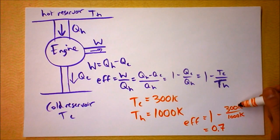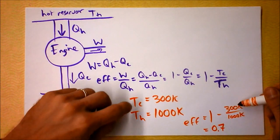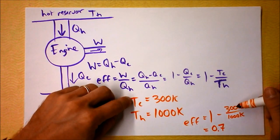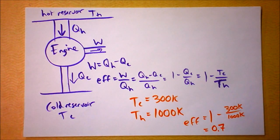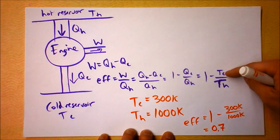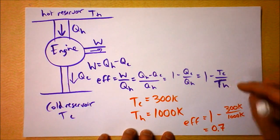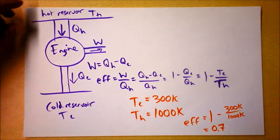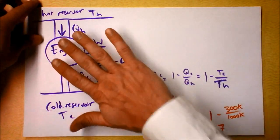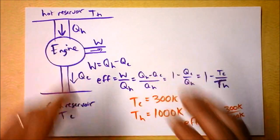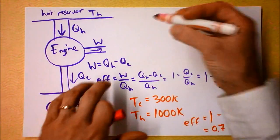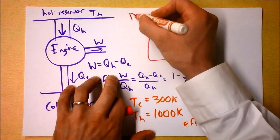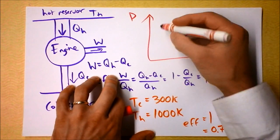Unless you have a cold reservoir of zero — and we'll see in the third law of thermodynamics that that's not really going to work for you — you're not going to have an efficiency of 1. Is the efficiency more dependent on the temperature of the cold reservoir or the temperature of the hot reservoir? You think about that. All engines work via this schematic, no matter how you're moving the gas.